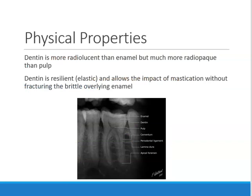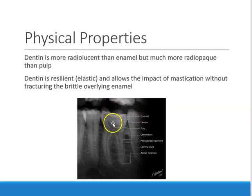When we take a radiograph, dentin is more radiolucent than enamel but more radiopaque than pulp. Radiopaque means white, so enamel looks white on a radiograph. Radiolucent means black — the pulp that I'm outlining here is radiolucent. Dentin is right in the middle: more radiolucent (more black) than enamel, but more radiopaque (more white) than pulp.